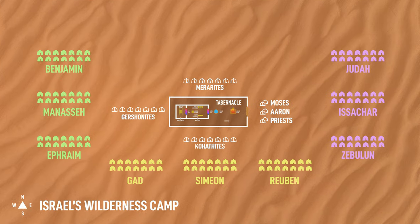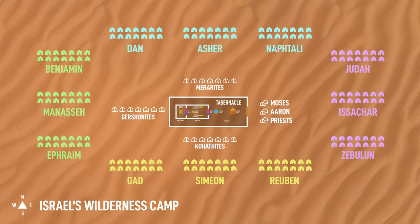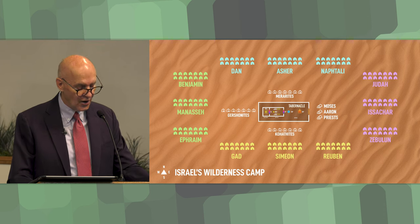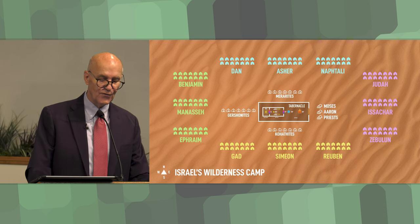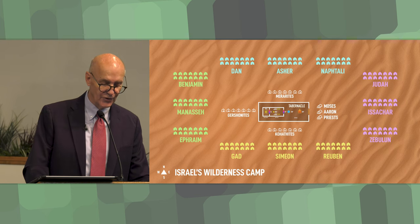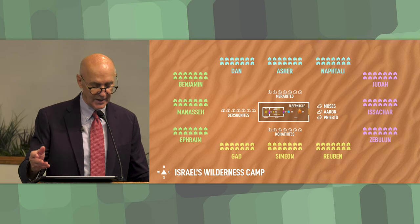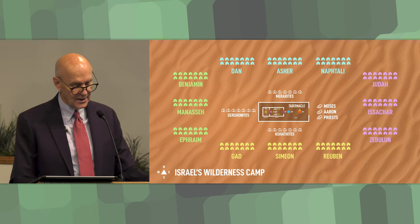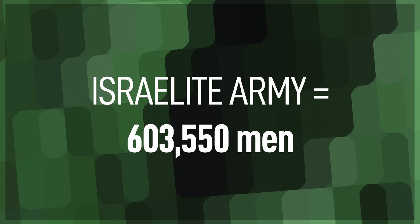Finally, there was the northern grouping. The tribal camps of Dan, Asher, and Naphtali, collectively under Dan's banner, were placed together on the northern side of the tabernacle. Dan is the oldest son of Jacob and Bilhah, one of Rachel's slaves. They totaled 157,600 men who could fight and were the last group to leave when they broke camp — they were the rear guard. So according to the Bible, the total strength of Israel's wilderness camp army was 603,550 men.